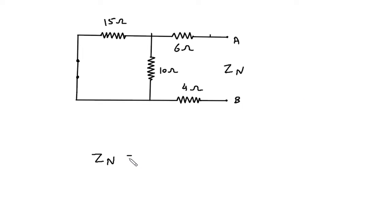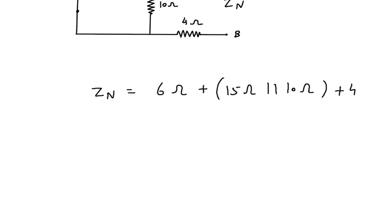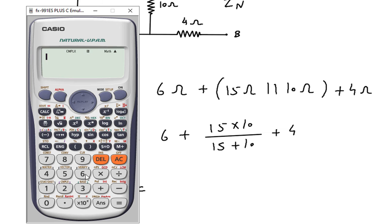Zn is equal to 6 ohm plus, where this 6 ohm is in series with the parallel combination of 15 ohm and 10 ohm, and that result is then in series with 4 ohm. So it will be: Zn = 6 + (15 × 10)/(15 + 10) + 4.